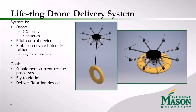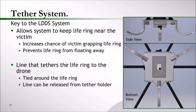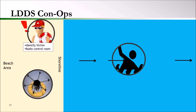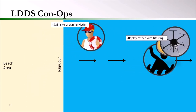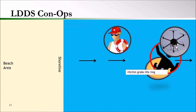We can increase survival time by delivering a flotation device to them. Our life ring drone delivery system involves a drone with two cameras, eight interchangeable batteries, and a flotation device holder and tether — which is the key to our system. The drone's goal is to supplement the current lifeguard rescue process by flying to the drowning victim and delivering a flotation device. The tether system keeps the life ring near the victim, increasing the chance of the victim grabbing it while preventing it from floating away. When a lifeguard identifies a drowning victim, they radio into the control room. Our drone will intercept that radio transmission, and while the lifeguard swims to the victim, the drone will also travel to the victim, deploy its tethered life ring, and keep it within range until the victim grabs it.